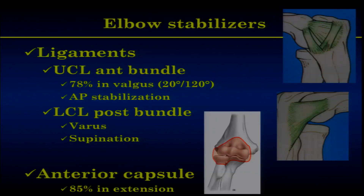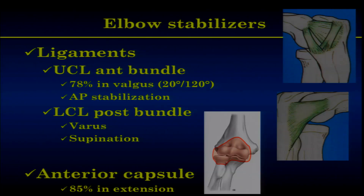The second stabilizers are the ligaments. The anterior bundle of the ulnar collateral ligament is most important in valgus. The lateral collateral ligament is torn in rotatory instability, especially in varus and supination. When you have rotation in supination, the capsule disrupts from lateral to medial by the posterior aspect — not the anterior aspect. The anterior capsule is in charge of 85% of stabilization in full extension, along with the medial collateral ligament and the coronoid process.